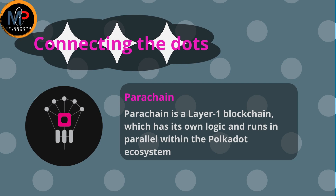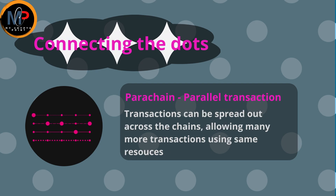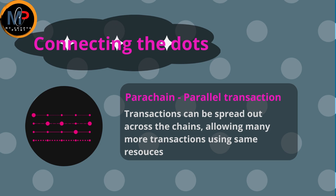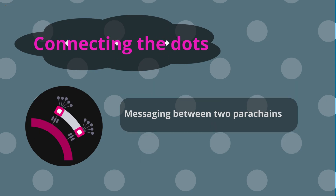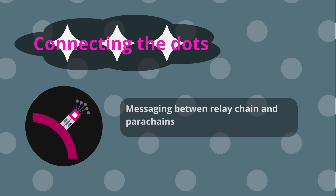The second component is Parachain — a layer-one blockchain with its own logic that runs in parallel within the Polkadot ecosystem. Transactions can be spread across chains, allowing many more transactions to be processed at the same time. With 10 Parachains, you can perform 10 times the work using the same source of security. Each Parachain can be programmed for different characteristics and features, and it enjoys both the characteristics of the relay chain and its own intrinsic features.